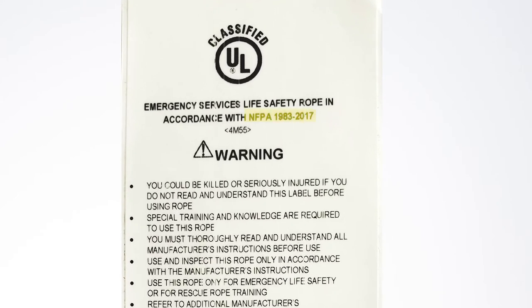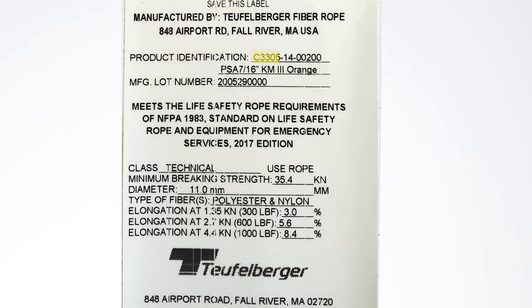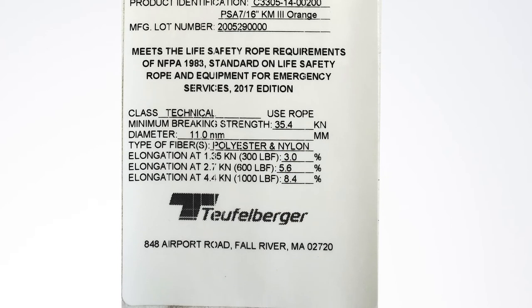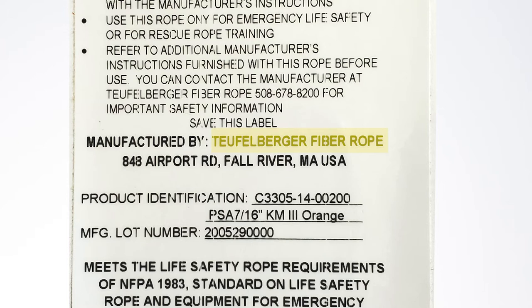We'll start with the NFPA label. The first things you want to look for on this label are the certifications that the rope is certified to, the product identification number, the name of the rope itself, the manufacturing lot number, which happens to also be the date of manufacture. In this case, the first two are the year and the second two are the month. So 2020, May, and the 29 is the date that it was manufactured on. The next thing you want to look for is the class of certification, the minimum breaking strength, the diameter to validate that it works with your hardware, the types of fibers that it's made out of, and the elongation on each of those. This information down here is the brand of rope. There are a lot of great brands out there, but there's only one great manufacturer, so that information should appear right here, and if your rope doesn't say Teufelberger fiber rope, you bought the wrong rope.